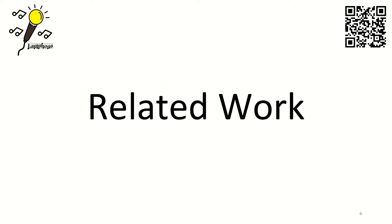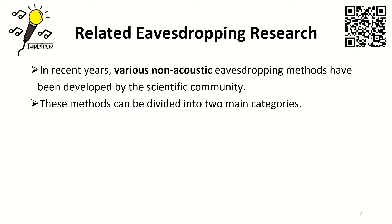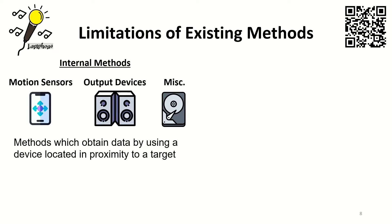Let's briefly review the related work in this area. In recent years, various non-acoustic methods to eavesdrop sound were introduced by our community. These methods can mostly be divided into two main categories. The first category is the internal methods, which obtain data by using a device — mostly a compromised device — co-located in proximity to the target. Under this topic, it was demonstrated how data obtained from motion sensors or even magnetic data from a hard disk can be used to recover speech.